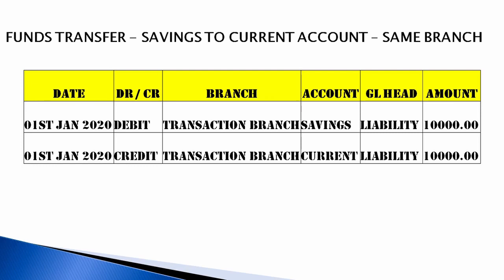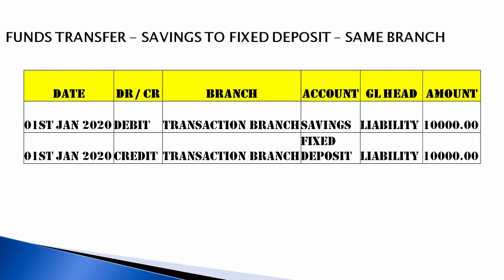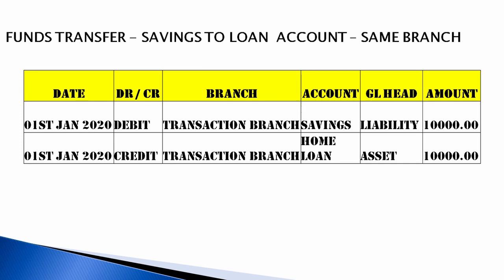For fund transfer from savings account to current account at the same branch, debit the savings bank account and credit the current account — both are liability general ledger entries, so the same ledger is debited and credited. For fund transfer from savings to fixed deposit, debit the savings or current account (liability) and credit the fixed deposit account, which is also a liability. For fund transfer from savings to a loan account, debit the savings or current account (liability) and credit the loan account, since loan is an asset — to reduce an asset balance, you credit it.